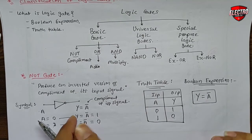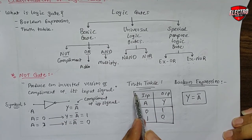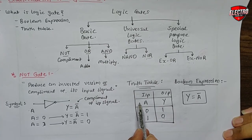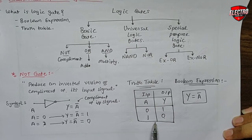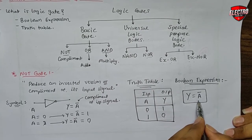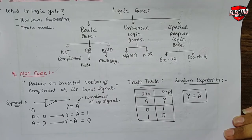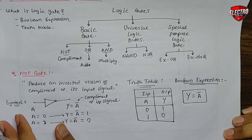The truth table of the NOT gate contains all possible combinations of input signal and the corresponding output signal in one table. The Boolean expression for the NOT gate is Y is equal to A complement. We will discuss each and every point of basic logic gates in each type. That's it for today's video lecture. In the next video we will start with the next two types of basic logic gates. Thank you.